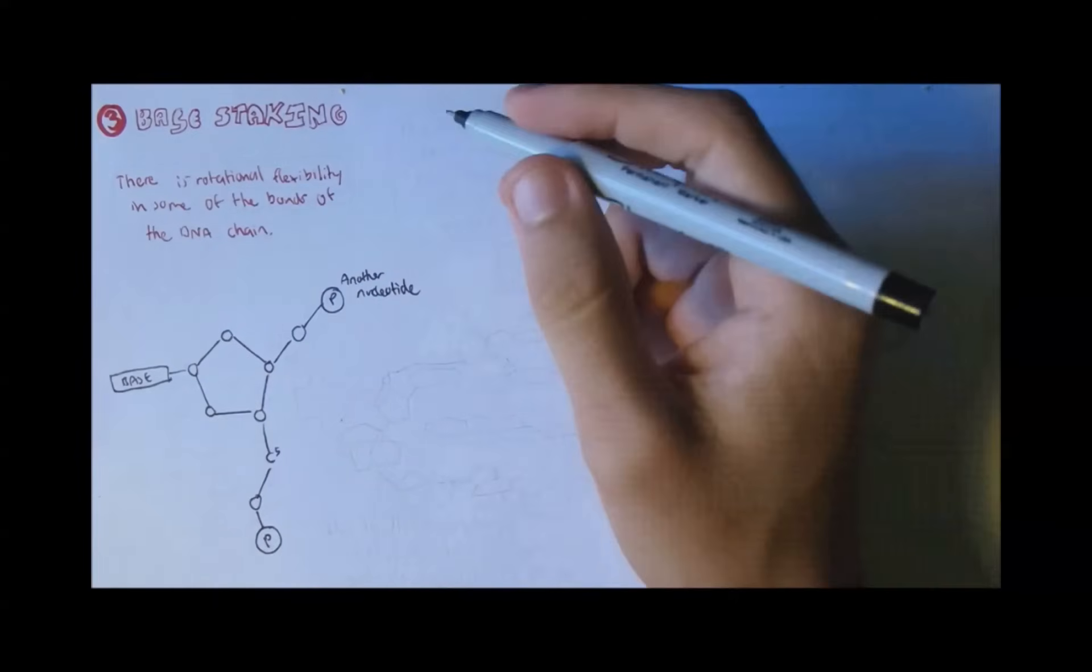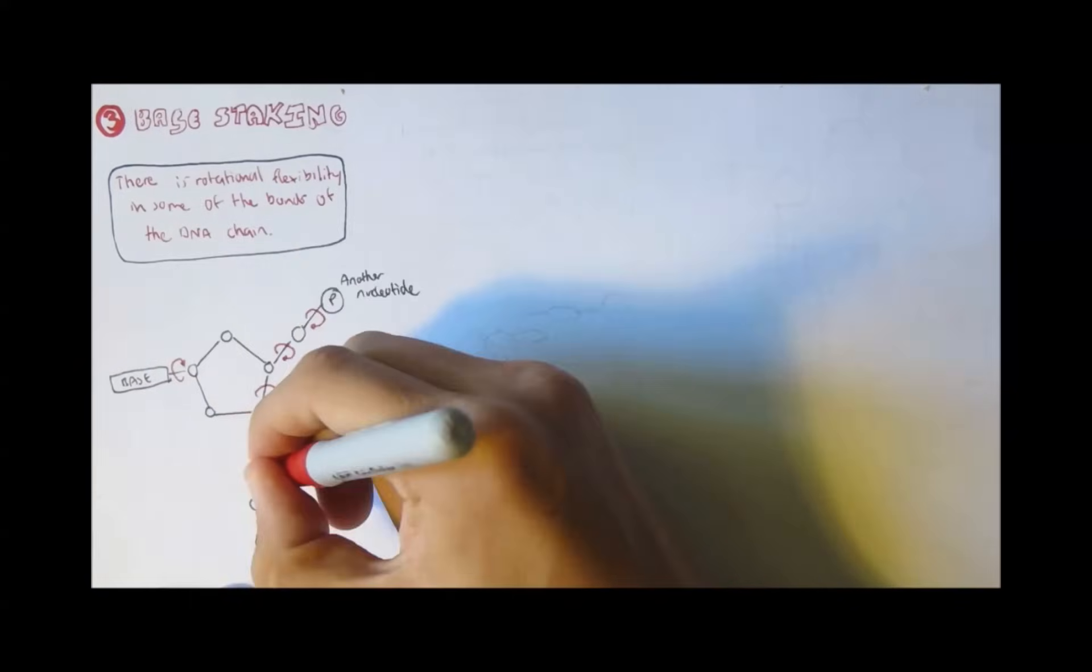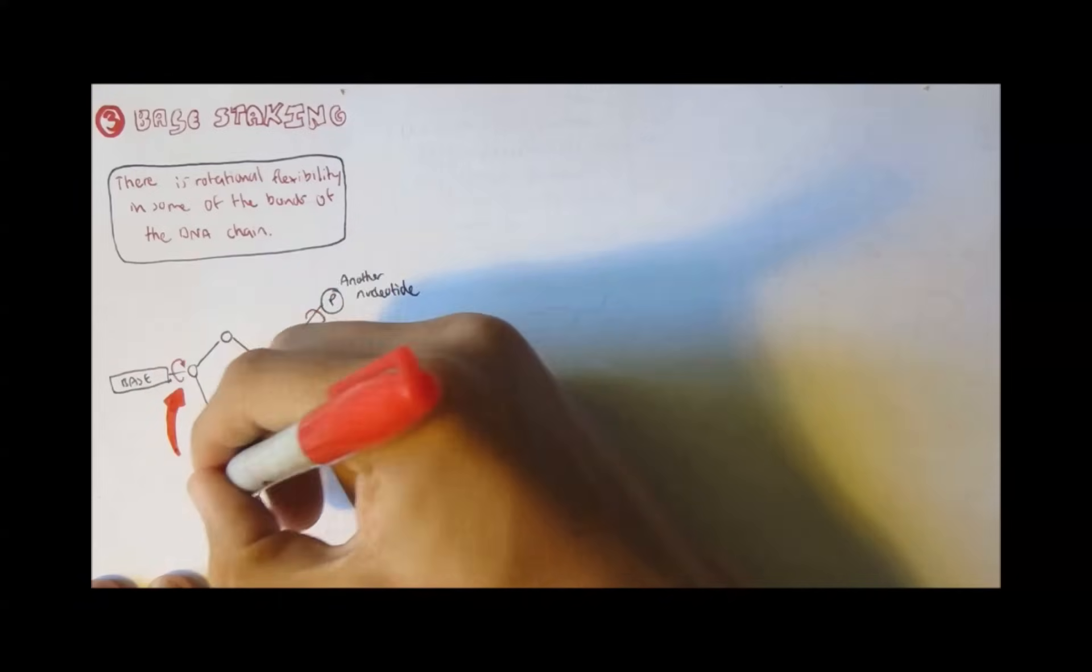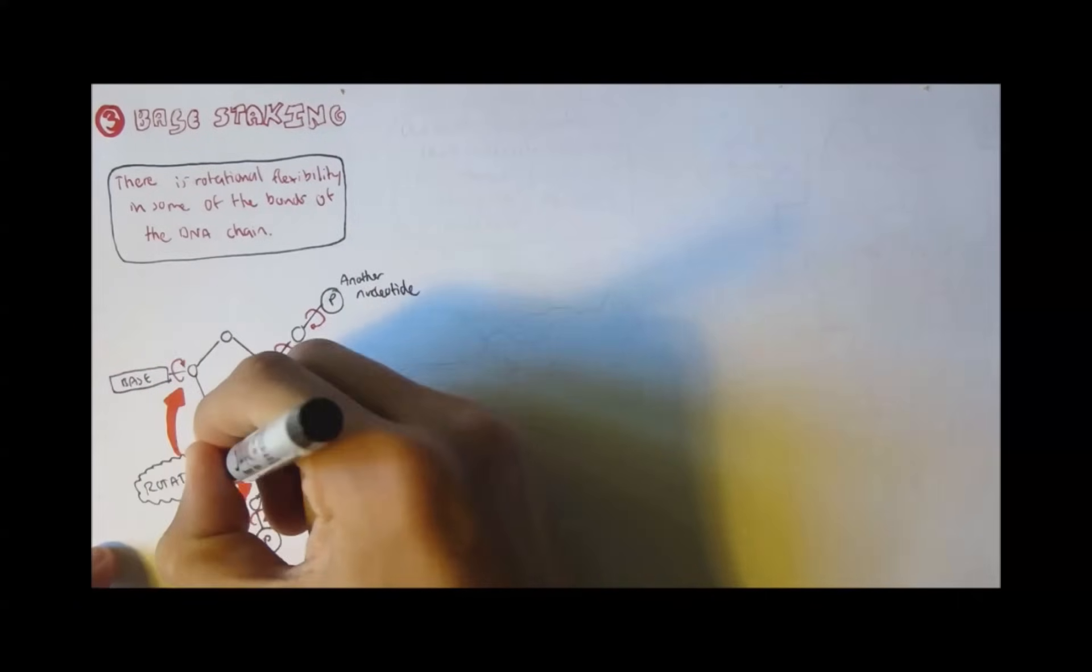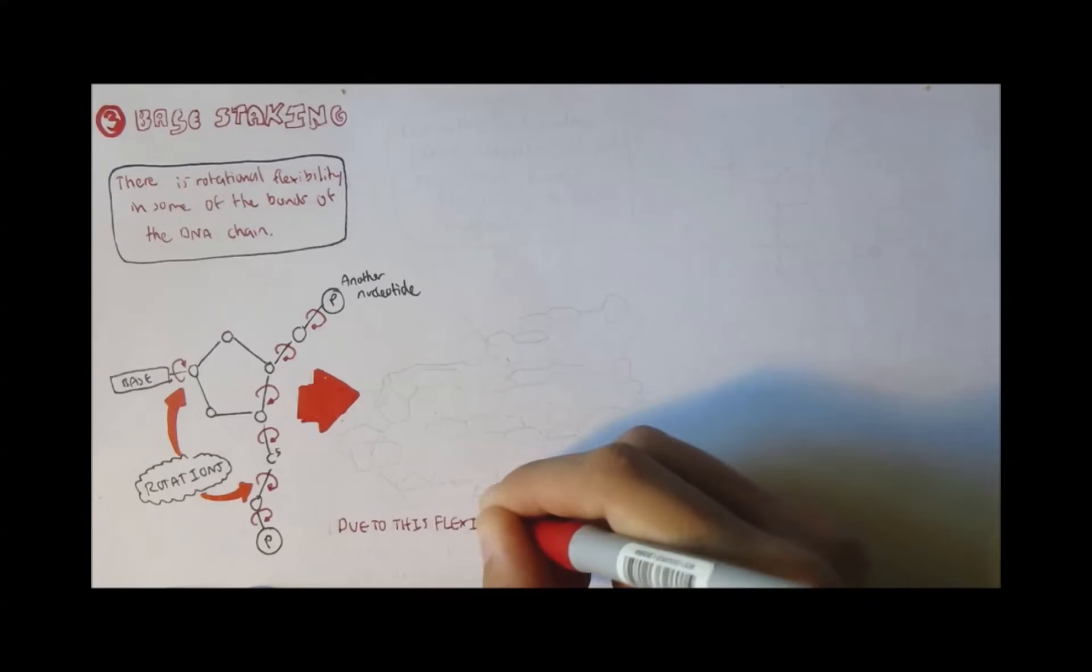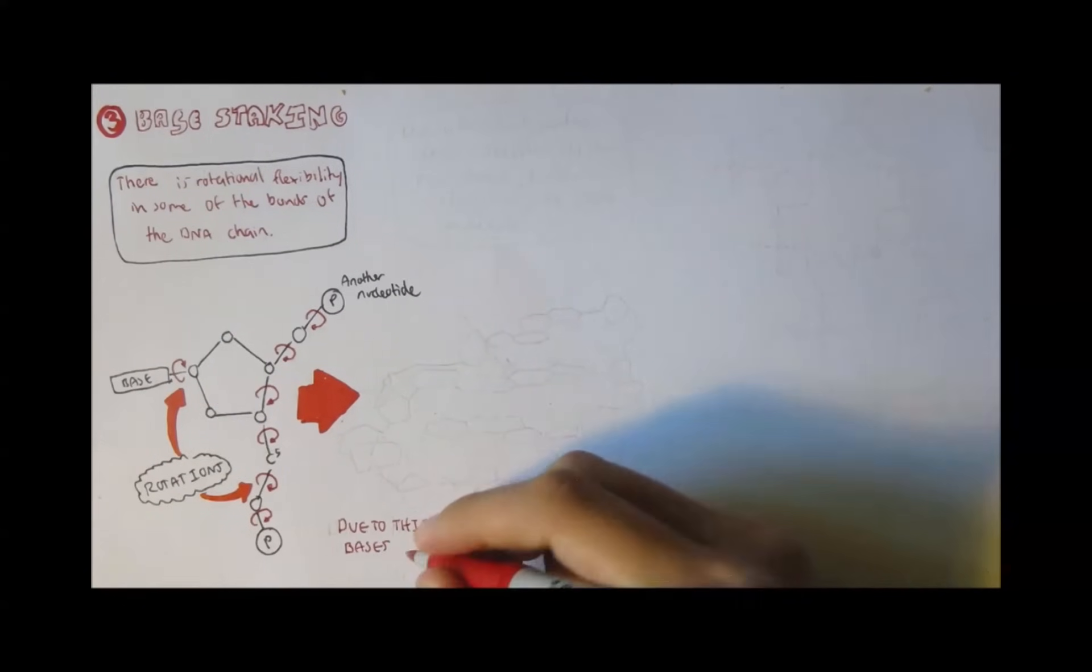There is rotational flexibility in some of the bonds of the DNA chain. So here we see rotations. And so due to these rotations and flexibility, the bases are like flat plates with the sugars at an angle.